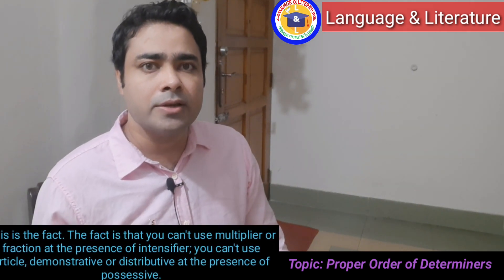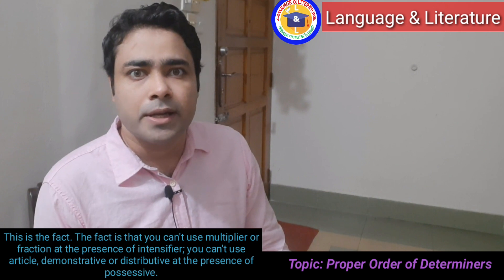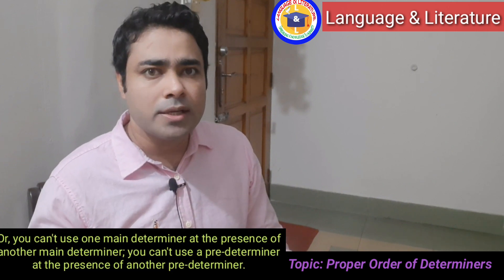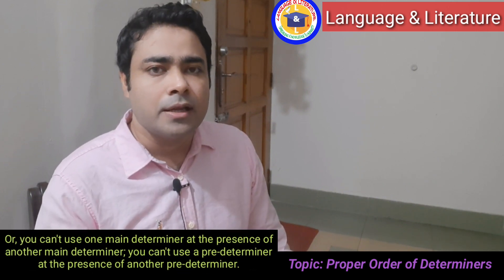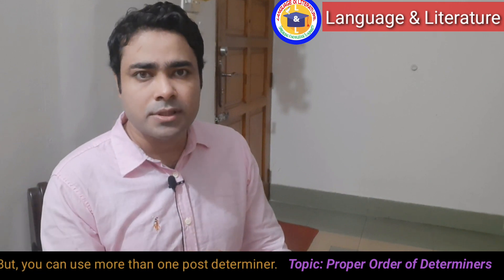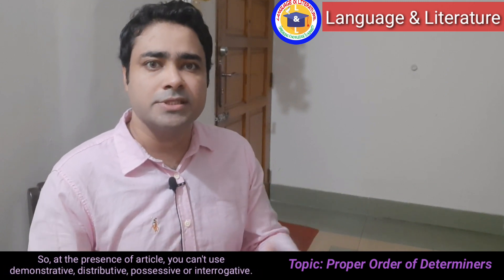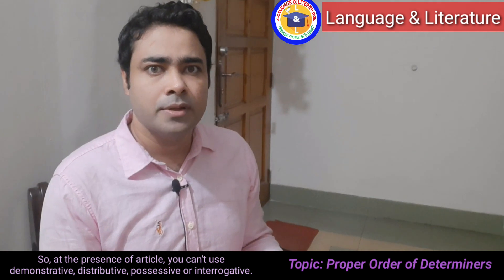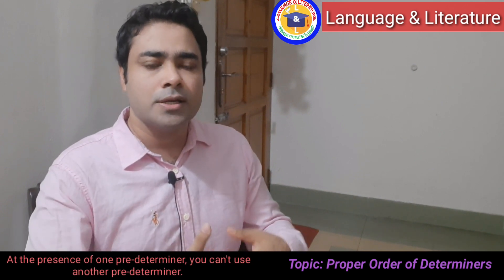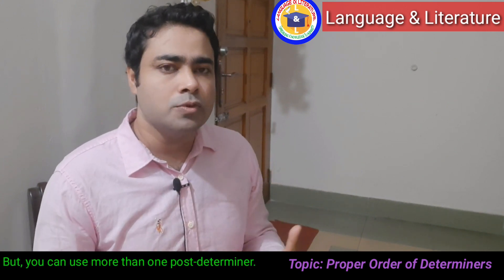The key rule is: you cannot use a multiplier and a fraction together with an intensifier as predeterminers. You cannot use an article, demonstrative, or distributive in the presence of a possessive — you cannot use one main determiner in the presence of another main determiner. Similarly, you cannot use one predeterminer in the presence of another predeterminer. But you can use more than one post determiner.